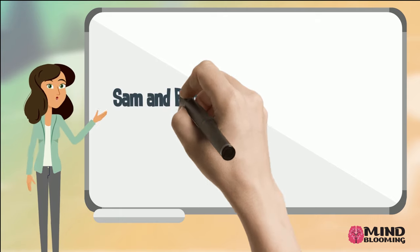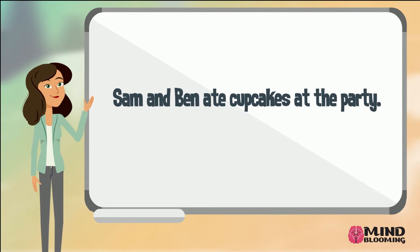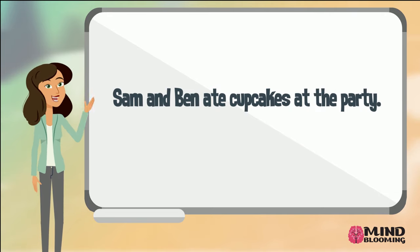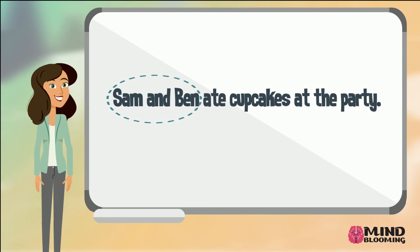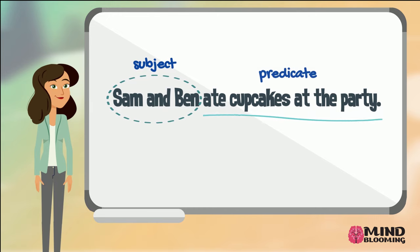Sam and Ben ate cupcakes at the party. Who is this sentence about? It is about Sam and Ben, both of them. So both Sam and Ben are the subject. What are they doing? They ate cupcakes at the party, so ate cupcakes at the party is the predicate.